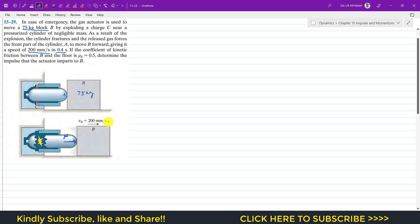It is said that the coefficient of kinetic friction between B and the floor is 0.5, so this means we have kinetic friction here.